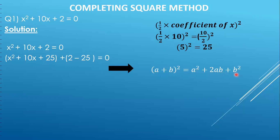If you were able to recall this formula, please let me know in the comment section. We have x squared plus 10x plus 25 and we want to convert it into the (a+b)² format. We know how to expand (a+b)² but not how to reverse it. Using a trick, you will be able to convert this part into (a+b)² easily.